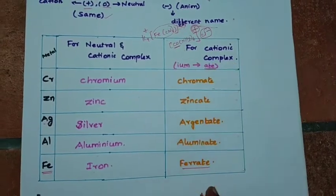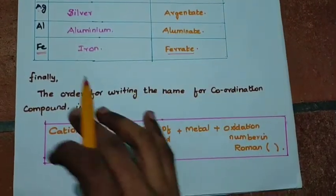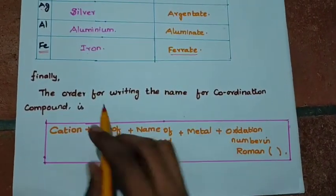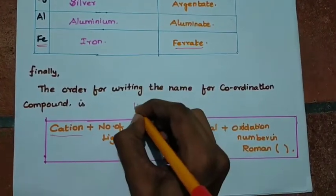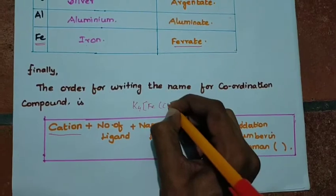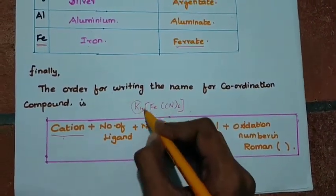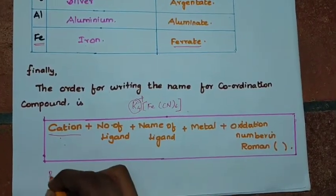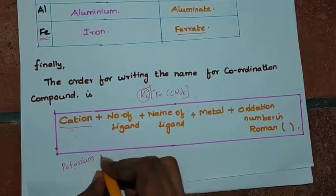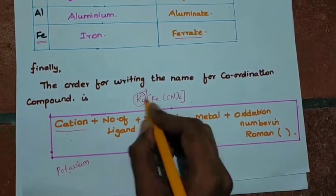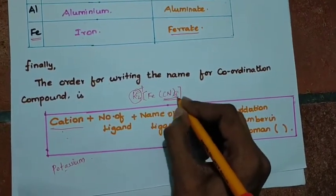So for minus complexes the name follows one pattern and for plus complexes another. Now let's work out the naming order for K4[Fe(CN)6]. First: cation. The cation here is K4, which is potassium. Then there will be a little gap, and then we name the inside of the bracket. The number of ligands here is 6, so we use 'hexa'.